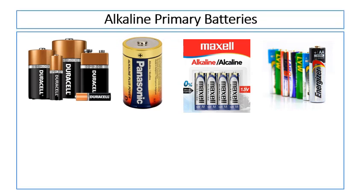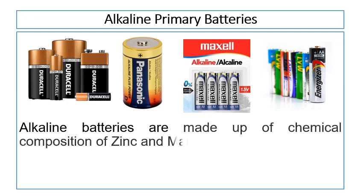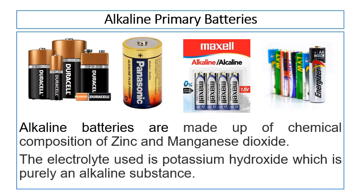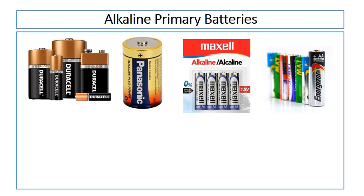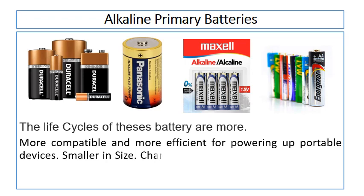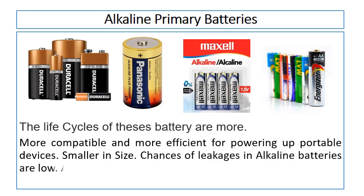Alkaline batteries are very popular primary batteries. These batteries are made of a chemical composition of zinc and manganese dioxide. The electrolyte used in alkaline batteries is potassium hydroxide, which is a purely alkaline substance. That's why this battery is called an alkaline battery. The life cycles of these batteries are more. Alkaline batteries are more compatible and more efficient for powering portable devices. They are smaller in size. The chances of leakage in alkaline batteries are very low. The alkaline batteries are a bit costly as compared to zinc-carbon batteries.